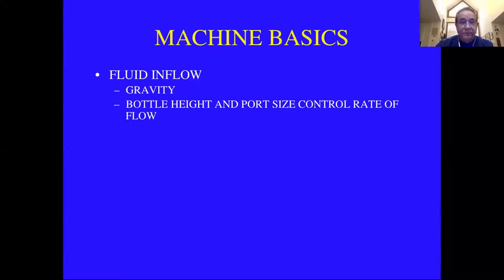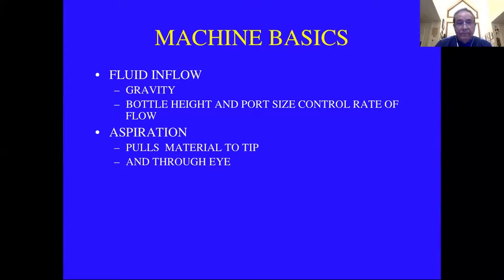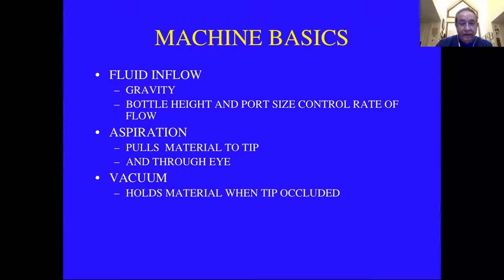The basics of the machine are pretty simple. You have fluid inflow — a bottle, usually with balanced salt solution. Most machines use gravity flow so that the bottle height and port size control the rate of flow when the valve is open. You have an aspiration pump which pulls material to the tip in the eye and then pulls emulsified material out into a disposal bag. Vacuum is generated when the tip is occluded — once occluded and vacuum builds, it helps hold the material on the tip so you can cut.